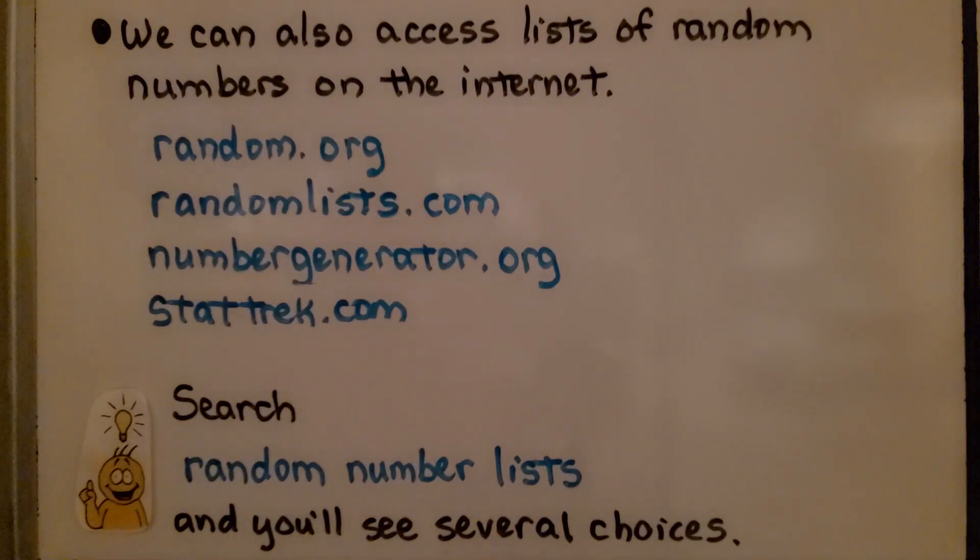We can also access lists of random numbers on the internet. You can go to random.org or randomlists.com, numbergenerator.org or stattrek.com. Just search random number lists on the internet, and you'll see several choices.